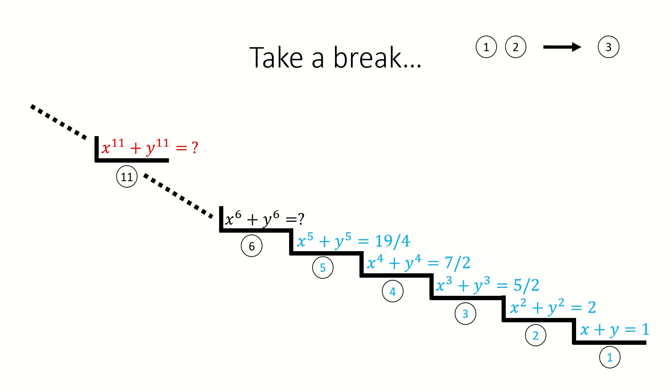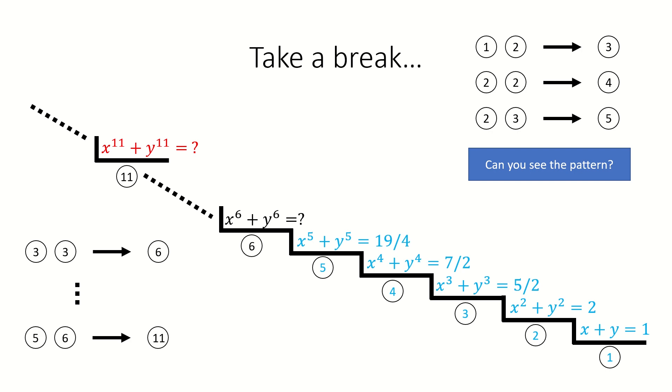1, 2 gives 3. 2, 2 gives 4. 2, 3 gives 5. Can you see the pattern? If we keep going, 3, 3 will give 6. What about oval 11? Oval 5 and oval 6 will generate oval 11. So we are almost there. As long as we got oval 6, we can immediately jump to stair 11.